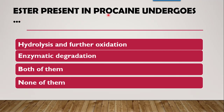Next question: the ester present in procaine undergoes which type of degradation? It undergoes hydrolysis and further oxidation — yes. It undergoes enzymatic degradation by the esterase enzyme — yes. Ester on hydrolysis gives acid and alcohol; the alcohol undergoes further oxidation to the corresponding aldehyde. So the correct answer is both — procaine undergoes both enzymatic degradation and hydrolysis followed by oxidation.